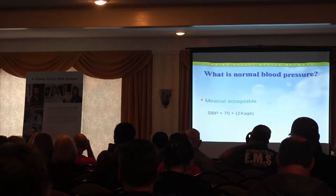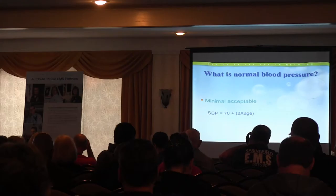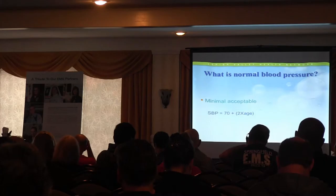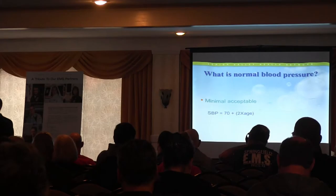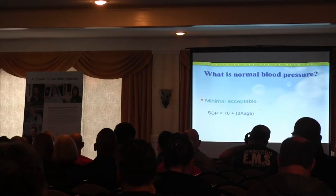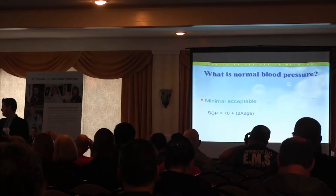Regarding blood pressures under age three — traditionally the teaching was you didn't need to get them, but now we get blood pressures on everyone. You have to know the minimum acceptable value. In general, minimum systolic blood pressure should be at least 70 plus two times the age in years. So for a one-year-old, minimum acceptable systolic is 72. For a five-year-old, it's 80.